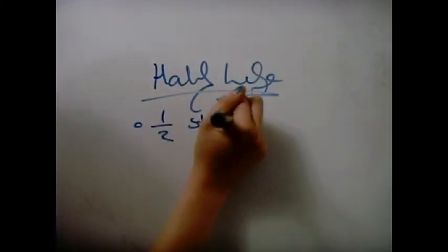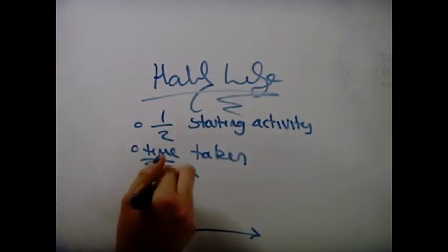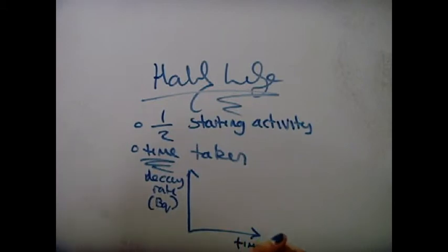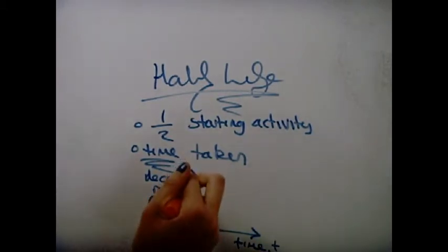Half-life is the time taken for the rate of nuclear decay to reach half of its starting activity. The proportion of material that decays remains the same.